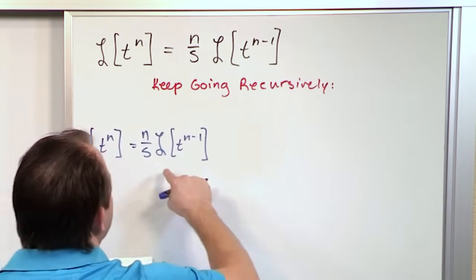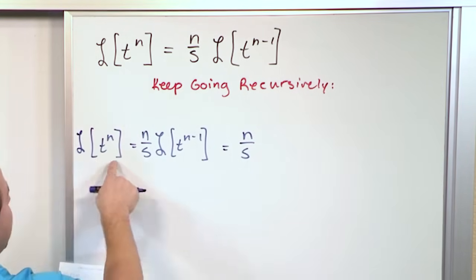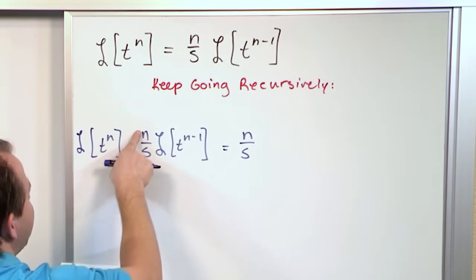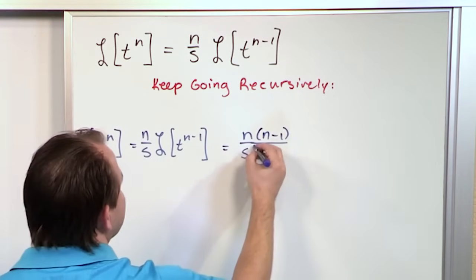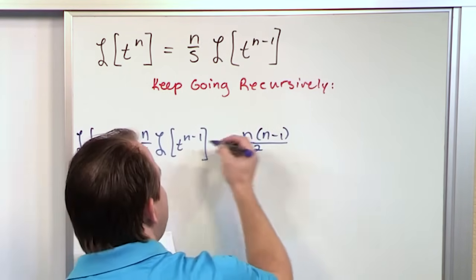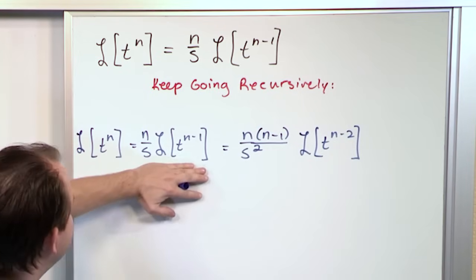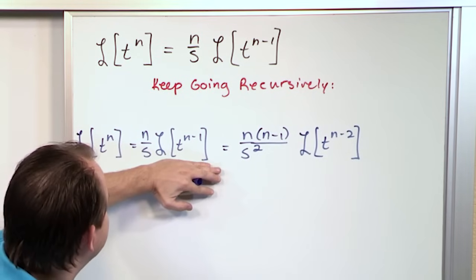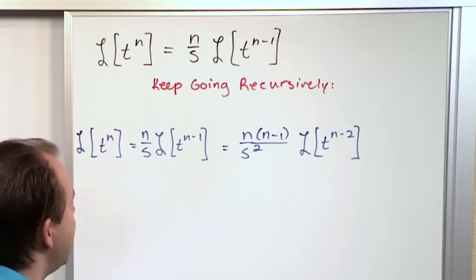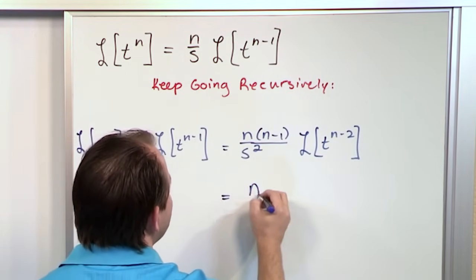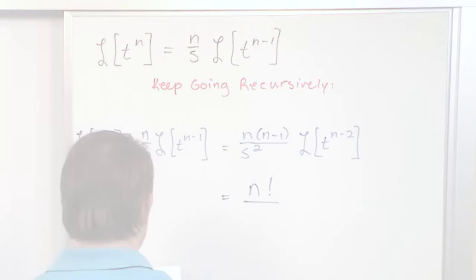If we want to apply the Laplace Transform of t to the n minus 1, the n over s stays out front. When I apply this one, whatever the exponent is comes out — n minus 1 — and another s goes on the bottom, making it s squared, and then I have the Laplace Transform of t to the n minus 2. So the Laplace Transform of t to the n becomes this, and if I try to evaluate that it'll be n over s times the Laplace Transform of this, with the exponent coming out and another s going to the bottom. If you keep doing this over and over, the numerator becomes n factorial because n times n minus 1 times n minus 2 keeps going — n factorial over s to the n.